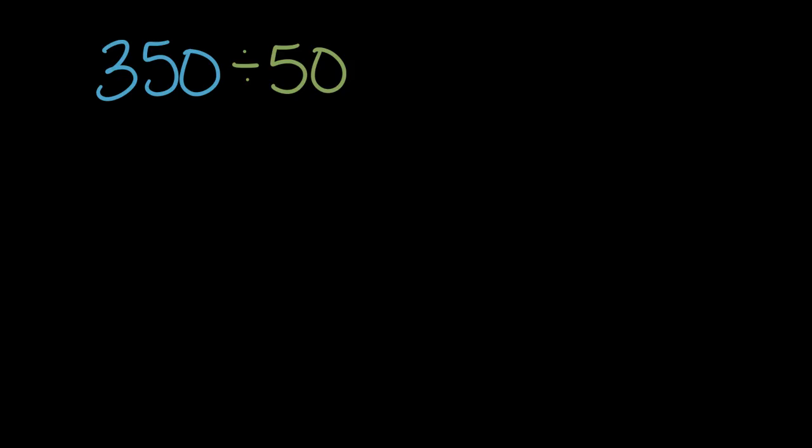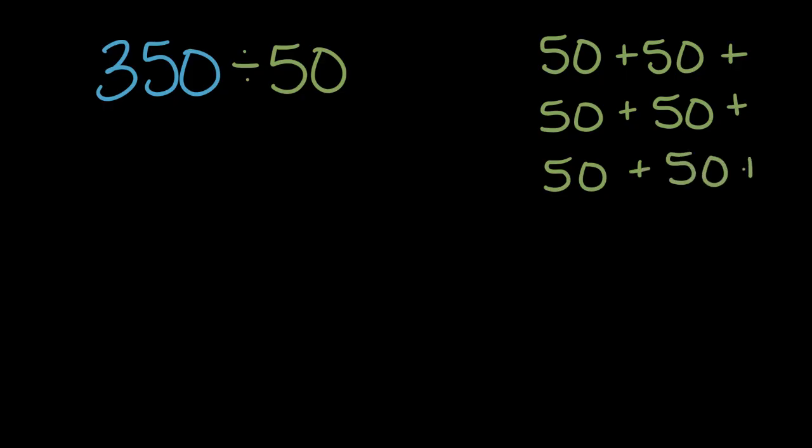Well one idea is to count by 50s until we get to 350 and see how many groups there are. One group of 50 would be 50, plus another group of 50 would be 100, plus another group of 50 is 150, another one will be 200, 200 plus 50 is 250, plus another 50 is 300, and plus one more 50 is 350.